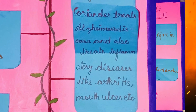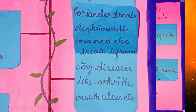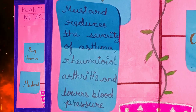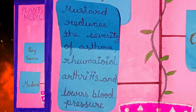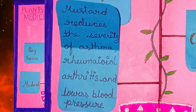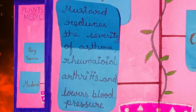Coriander treats Alzheimer's disease and inflammatory diseases like arthritis and mouth ulcers. Mustard reduces the severity of asthma and rheumatoid arthritis and lowers blood pressure.